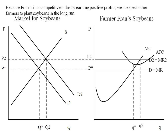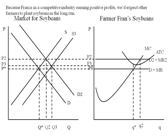Now because this is a competitive industry earning profits, we'd expect other farmers to plant soybeans in the long run. This would increase the supply, giving us a lower price and in this case a higher quantity. We take that price over — we have a new demand and marginal revenue curve — giving us a new optimal level of output, and in this case the firm is breaking even.